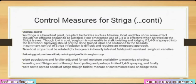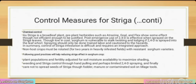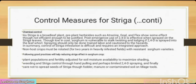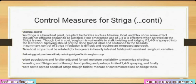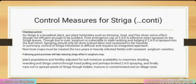Chemical control: as Striga is a broadleaf plant, pre-plant herbicides such as atrazine and flazasulfuron show some effect, but not efficient enough to be fully justified. Post-emergence use of 2,4-D is effective when sprayed on Striga leaves, but sorghum is vulnerable to stalk lodging if 2,4-D is sprayed into the leaf whorl. Spraying should only be done by trained labor with caution. In summary, control of Striga requires an integrated approach: rotate non-host crops for 2 years in heavily infested fields with resistant sorghum varieties; adjust plant population and fertility for soil moisture to maximize canopy shading; use hand-pulling and limited 2,4-D spraying; and avoid spreading Striga seeds through fodder, manure or contaminated soil on tillage tools.